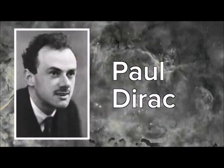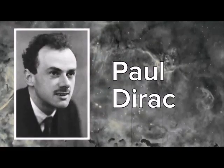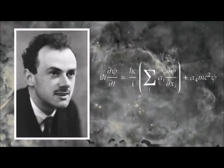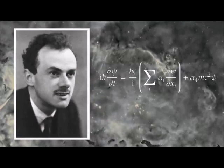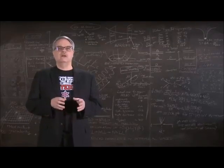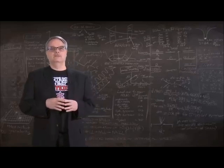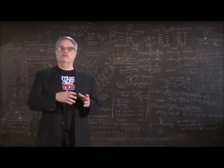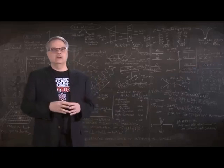However, things changed in the late 1920s when Paul Dirac started puttering around with quantum mechanics. One thing he did was successfully merge quantum mechanics and Einstein's theory of special relativity. Another thing he spearheaded was a way to figure out how to make a fully quantum theory. He did this by finding a quantum formulation of the electric field surrounding the proton.